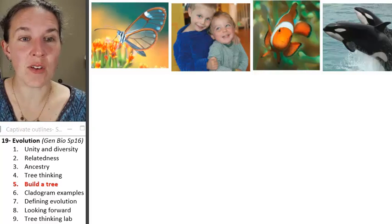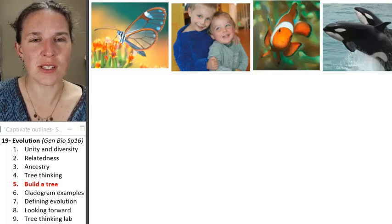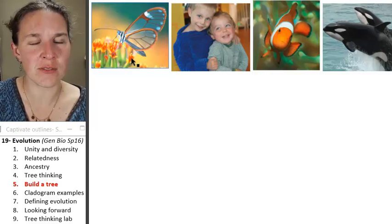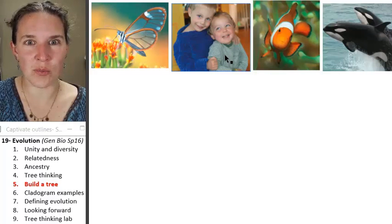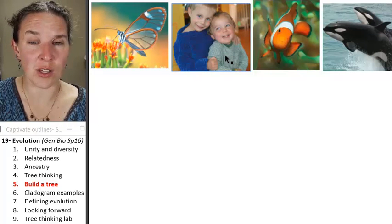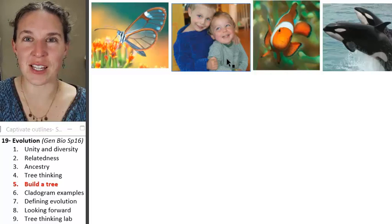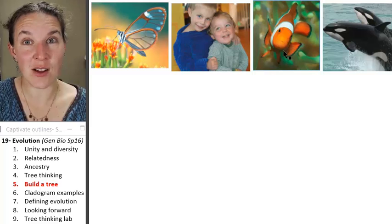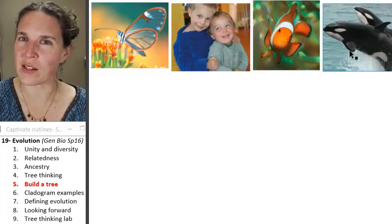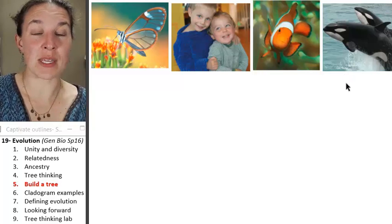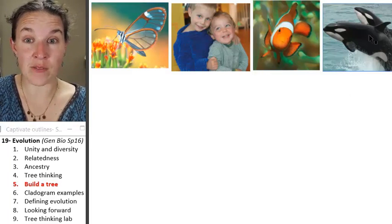We're back, and this time we've got a selection of critters across the top. You will notice that I got us a very lovely butterfly, a very adorable pair of small humans. How cute are those little clowns? And then we had to have a clownfish to go next to the clowns and a couple of whales. Your job is to build an evolutionary tree out of these critters.